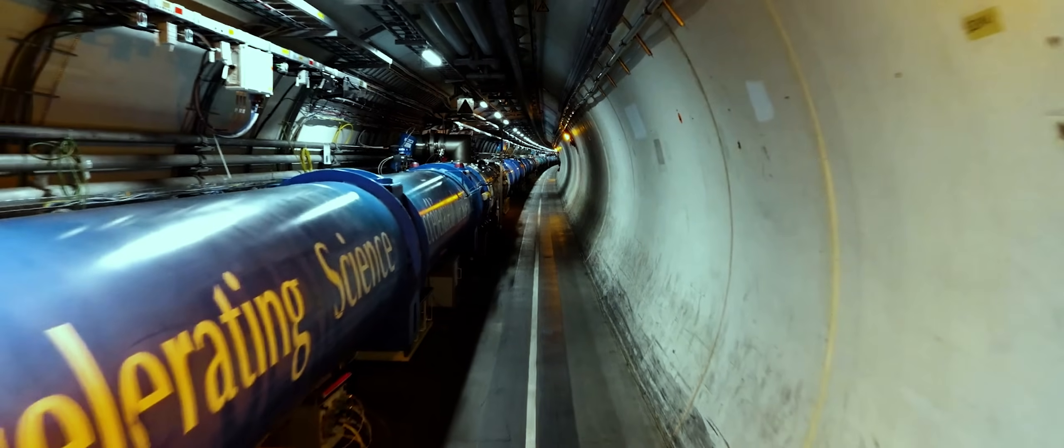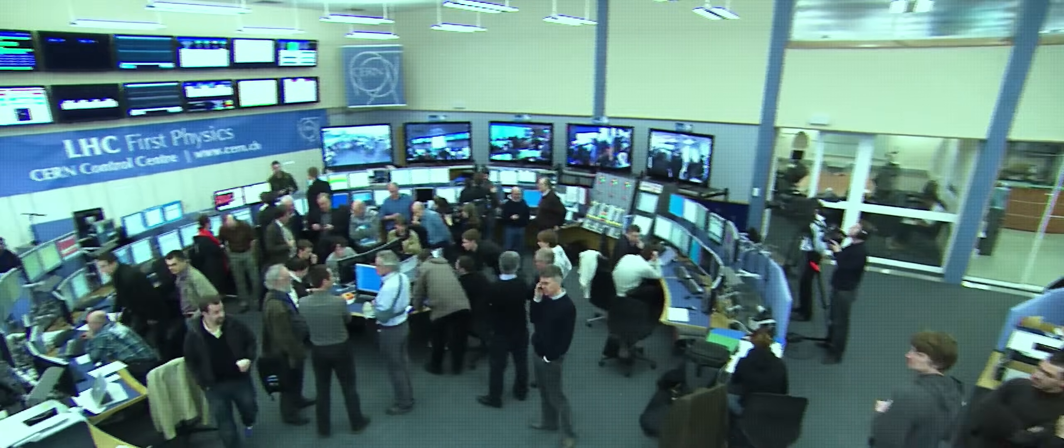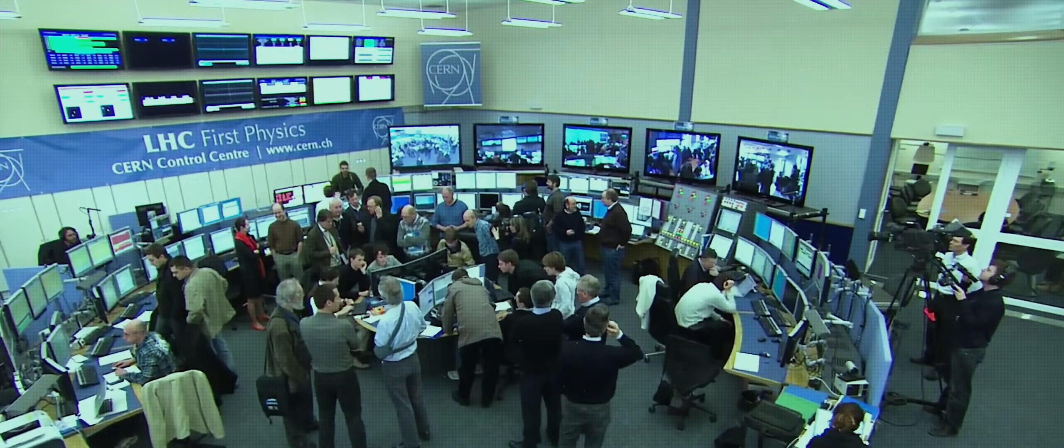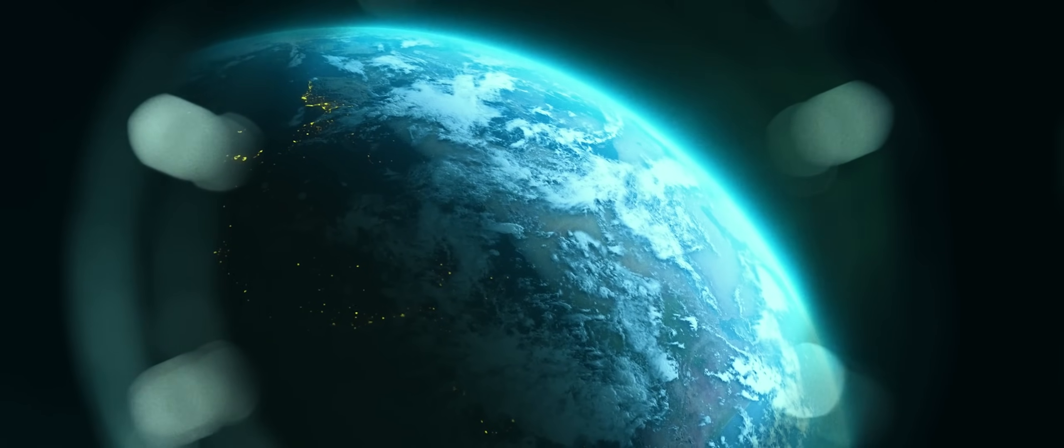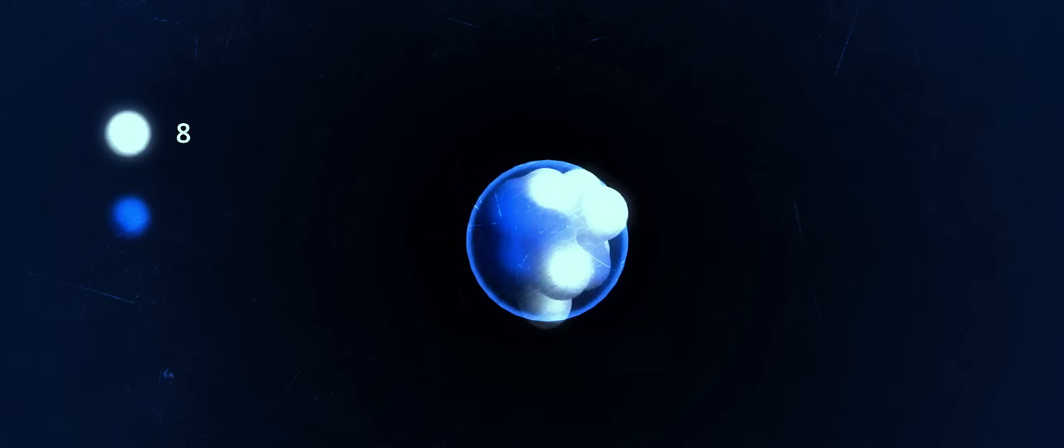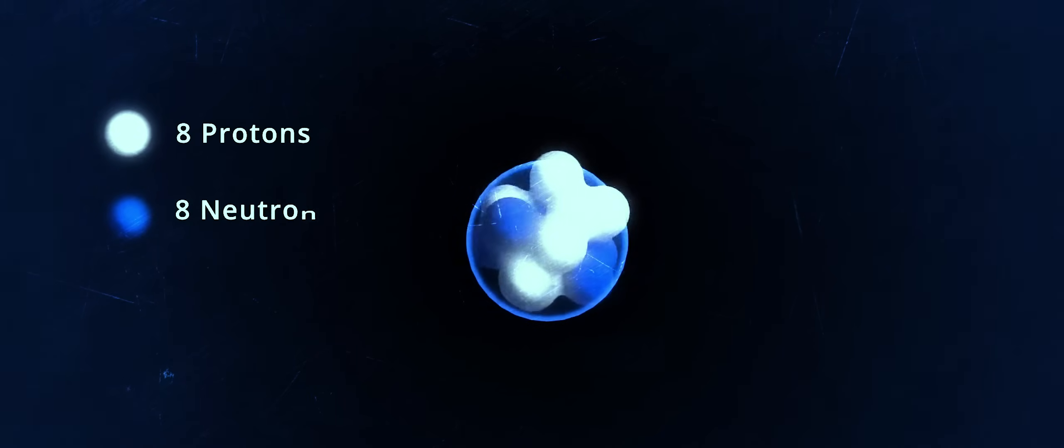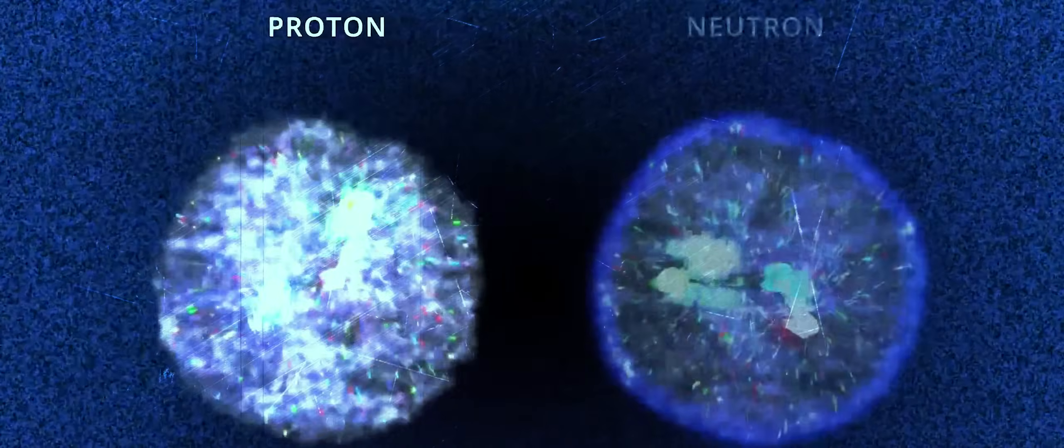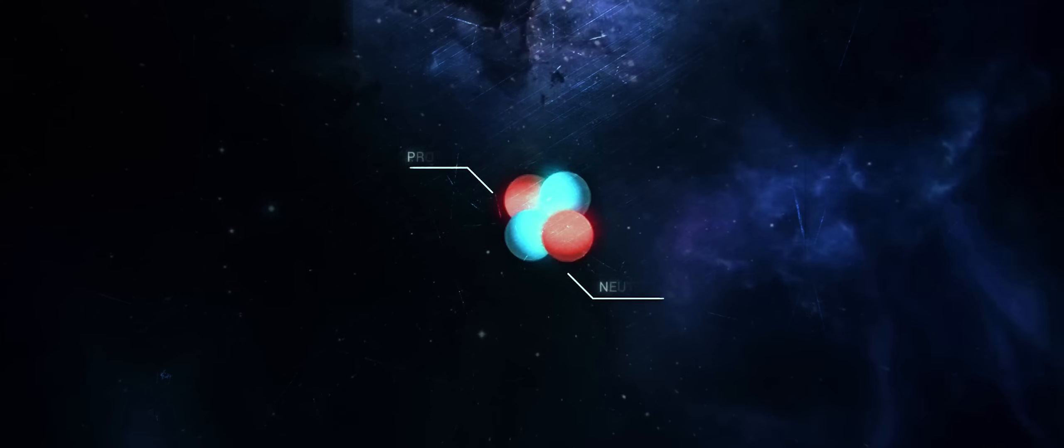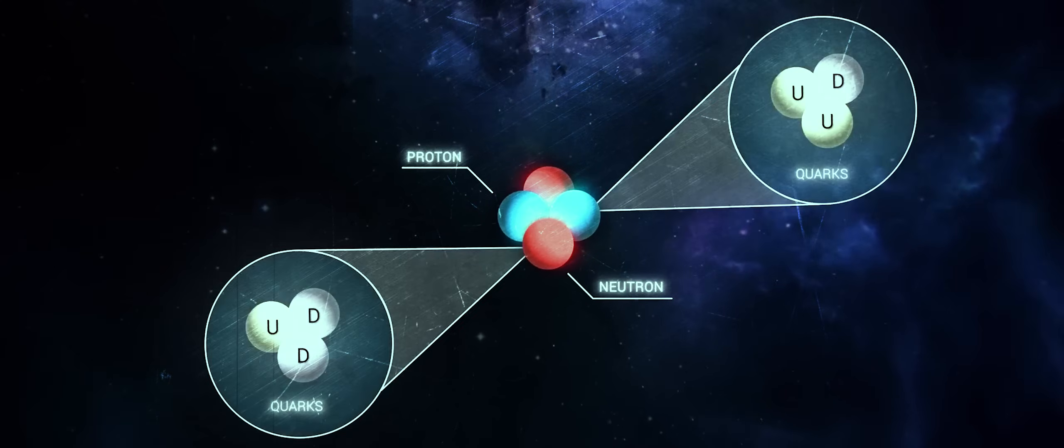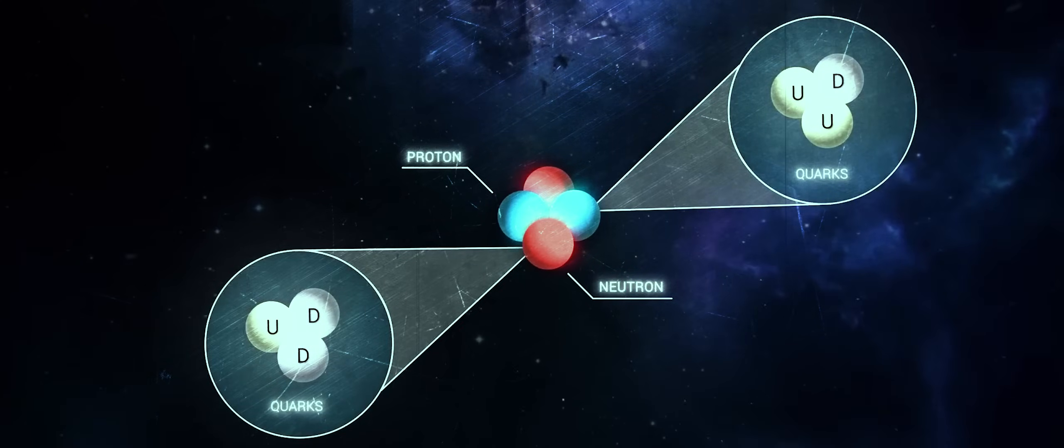Understanding why this was even a remote possibility requires us to delve into the very heart of matter itself. The anatomy of a world eater. The world we see is built from atoms. The hearts of those atoms, the nuclei, are built from protons and neutrons. For a long time, we thought that was the end of the story. But we now know that protons and neutrons are themselves composite objects. They are tiny bags, each containing three smaller, more fundamental particles, called quarks.